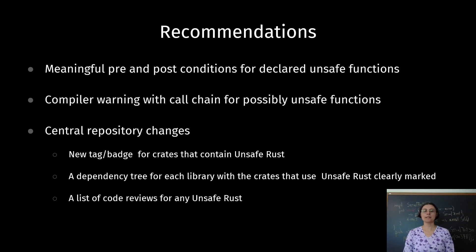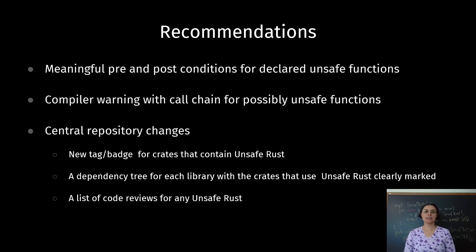To help developers write correct unsafe code and understand when unsafe code is used, we propose the following: a mechanism for defining pre and post conditions for declared unsafe functions; the compiler should print a warning along with a call chain for every possible unsafe function; and we propose changes to the central repository — every crate that contains unsafe code must be clearly marked, a dependency tree for each library should print which crates use unsafe, and a list of code reviews of any unsafe Rust should be maintained.